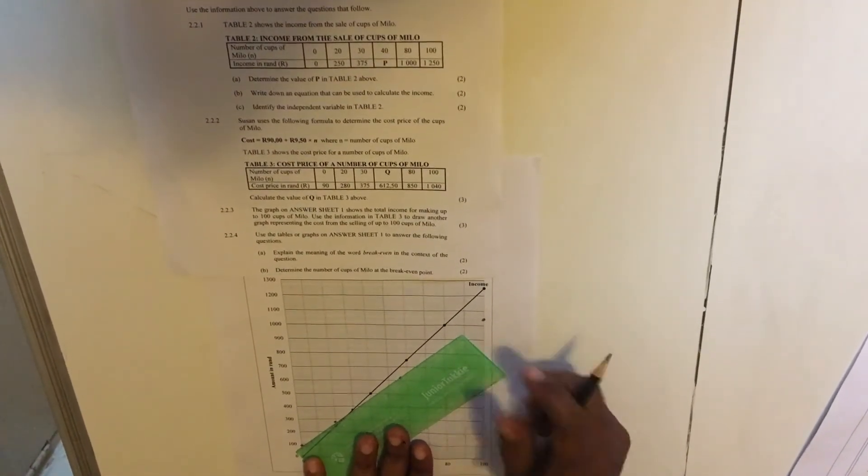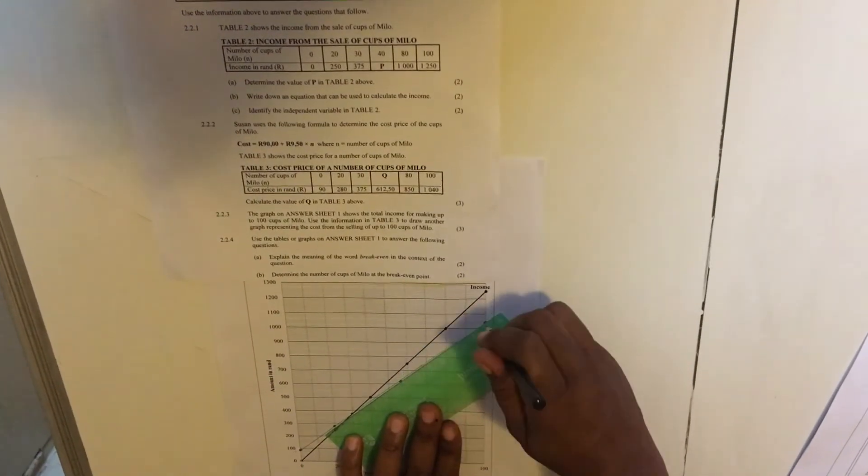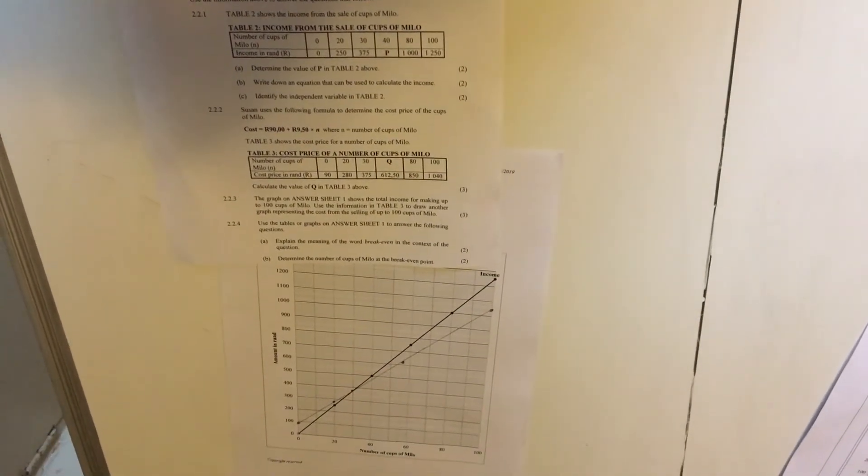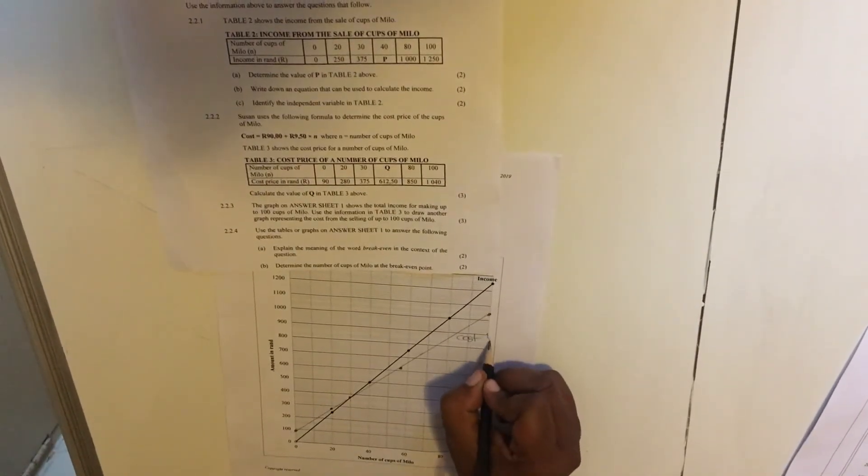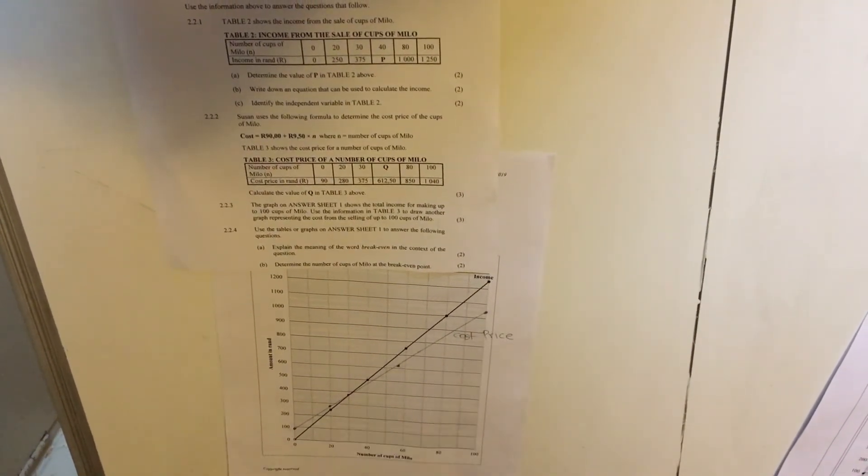Then you take your ruler. You join your points. There. And this is our cost, cost price graph. This one was the income one.